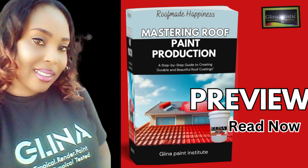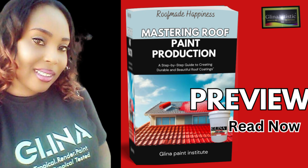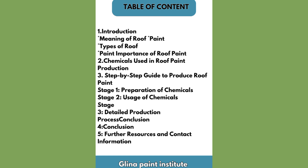It is necessary that you try to get the e-book for roof paint production. Due to time, we will be stopping here. In the e-book, you will also read about other chemicals not mentioned here. Now, add the rest of the chemicals left into the mixture and stir for 45 minutes. Your roof paint is ready.